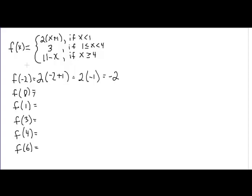Now if we evaluate f of zero, zero makes again this first inequality true. Zero is less than one. It does not make this one true. It does not make this one true. It'll only make one of them true if it's a proper piecewise function. So again we're going to substitute in zero for this x. Two times zero plus one is two times one, and that's two.